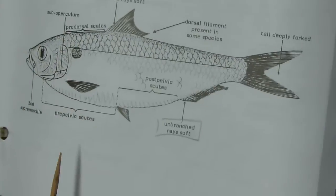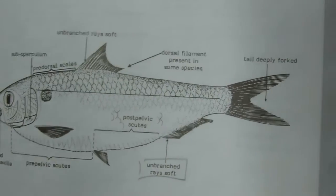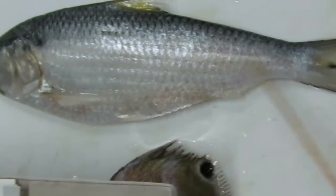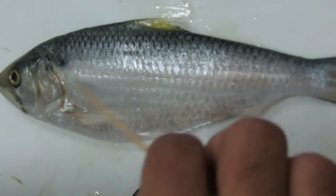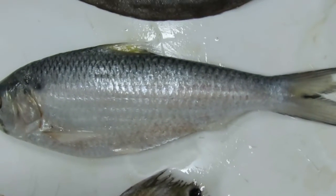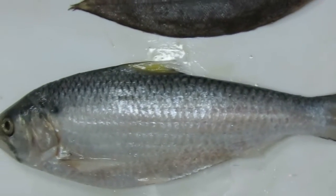Next, in the families Clupeidae, Chirocentridae, Engraulidae, and Mugilidae, the lateral line is absent in all these species. You cannot find any kind of lateral line in these families.